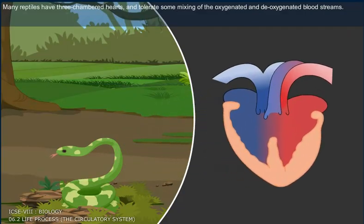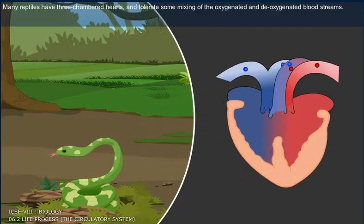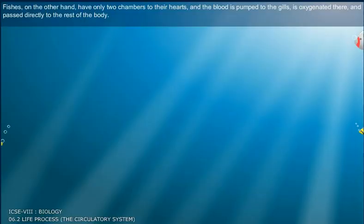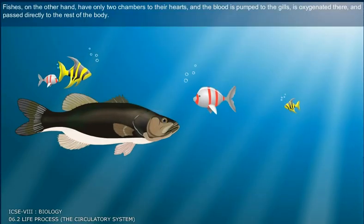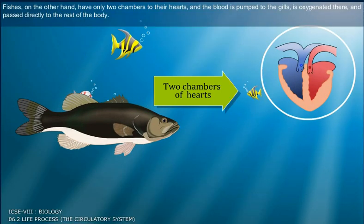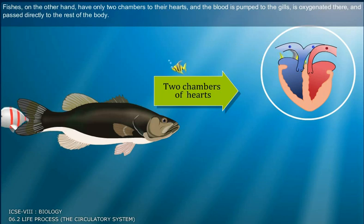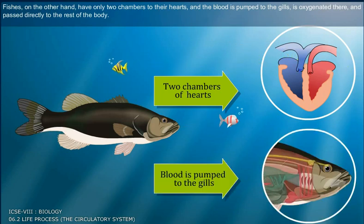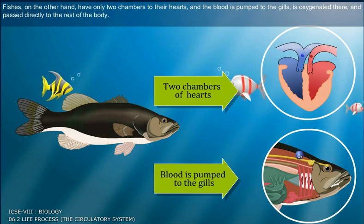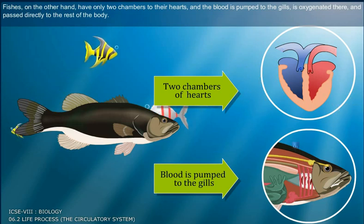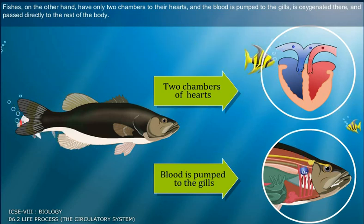Many reptiles have three-chambered hearts and tolerate some mixing of the oxygenated and deoxygenated blood streams. Fishes, on the other hand, have only two chambers to their hearts, and the blood is pumped to the gills, is oxygenated there, and passes directly to the rest of the body.